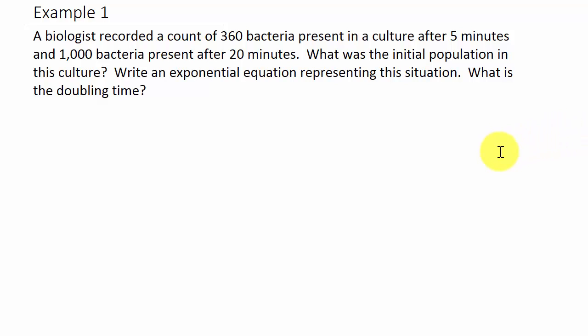Alright, so this problem here we're going to look at exponential growth. A biologist recorded a count of 360 bacteria present in a culture after five minutes and 1,000 bacteria present after 20 minutes. There are three things we need to find: the initial population in the culture, an equation representing the situation, and the doubling time.